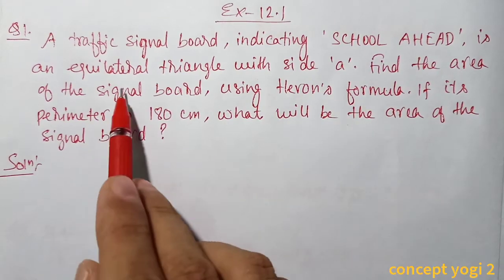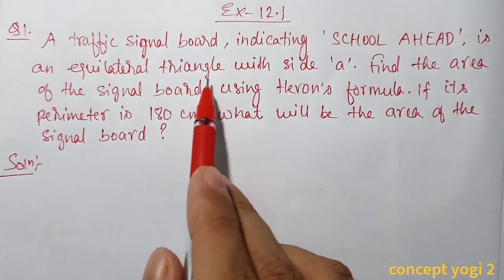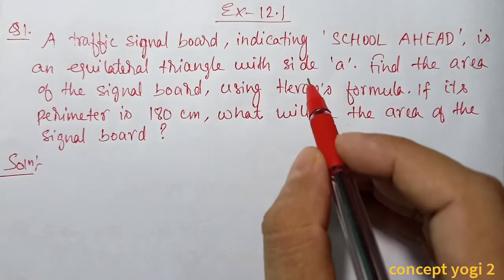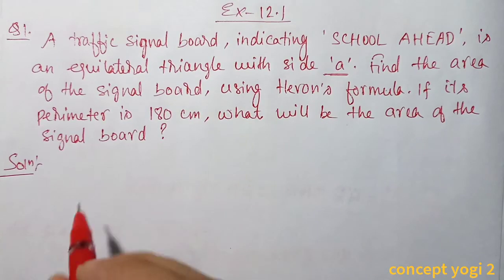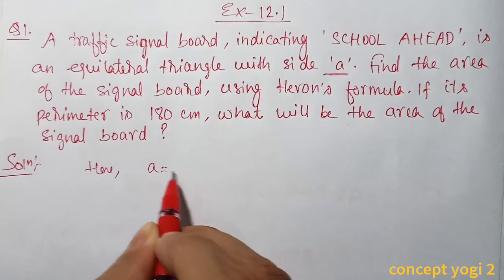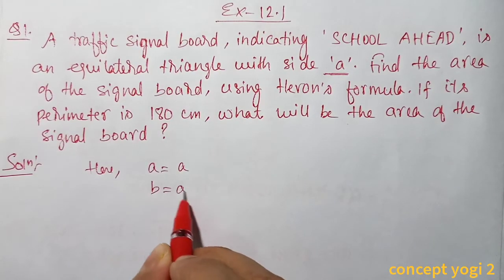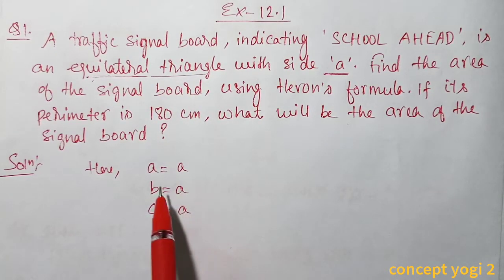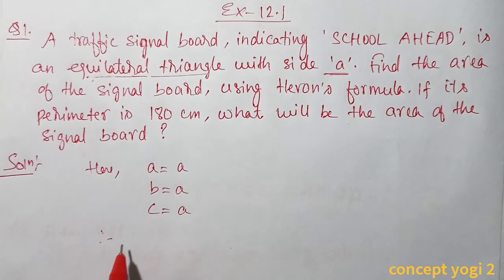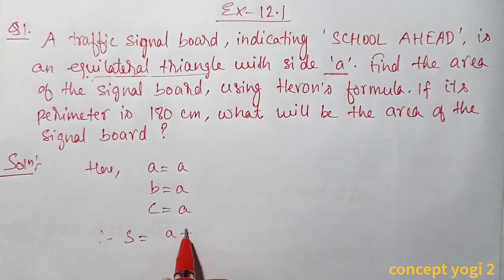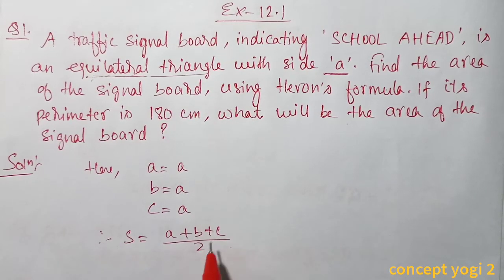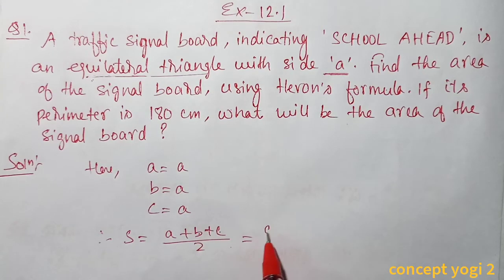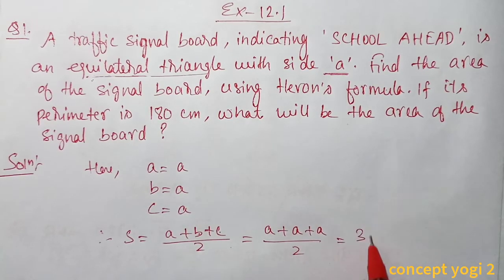Since it is an equilateral triangle, all sides are equal. Since one side is a, the other two sides are also a. So here a = a, b = a, and c = a. Semi-perimeter s = (a + a + a) / 2 = 3a / 2.